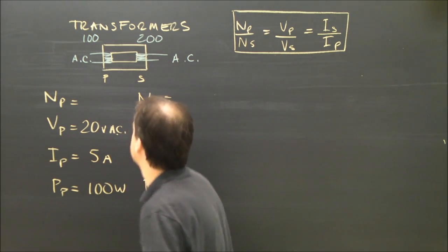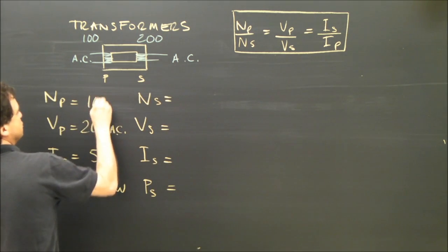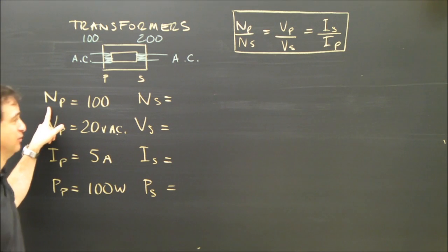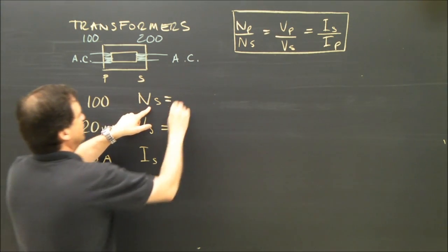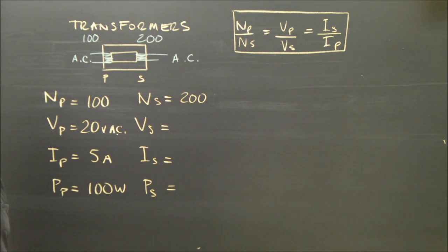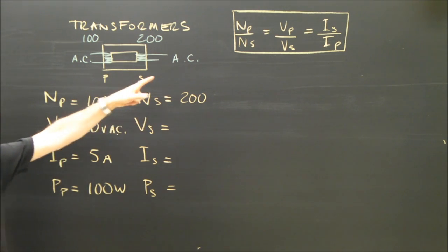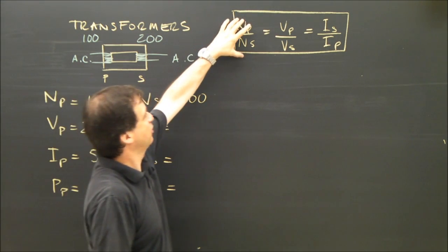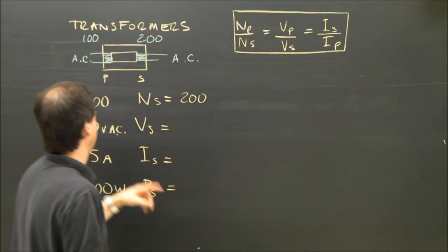So let's look at what numbers we have. We have 100 turns on the primary. N stands for the number of loops. The number of loops on the secondary is 200. So I guess what I'm looking for is anything I don't have. Well, notice I've got 20 volts on the primary and I have these two, so I can use this formula. We're going to use this part, the number and the voltage part, to figure it out.